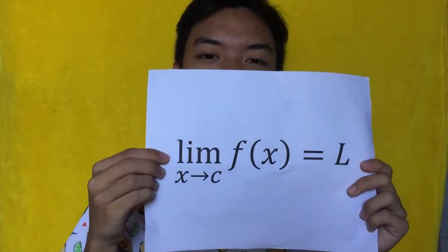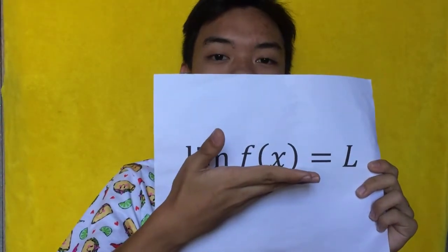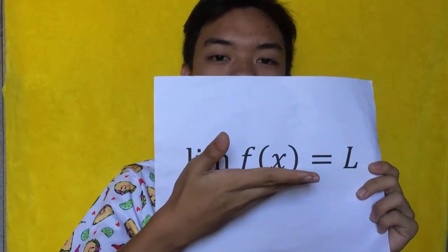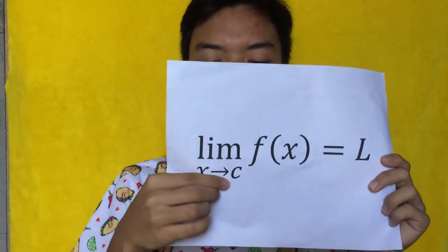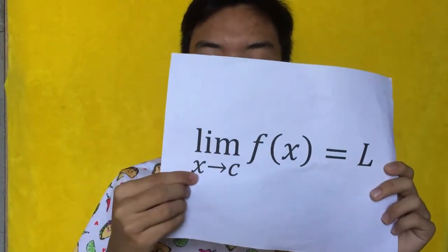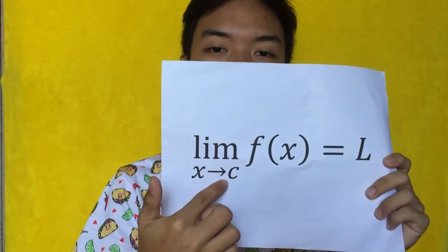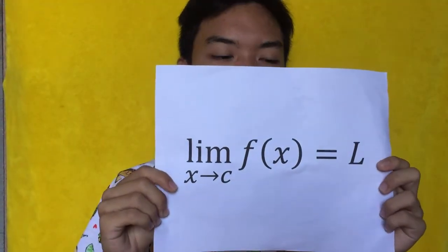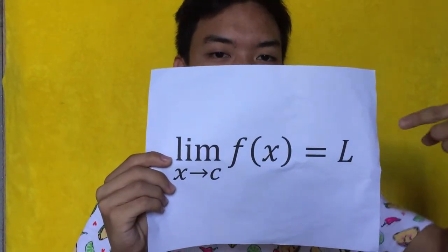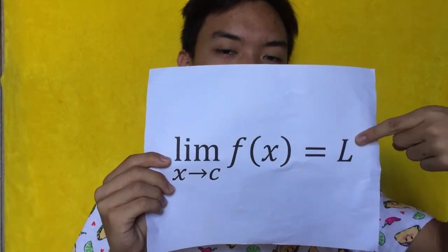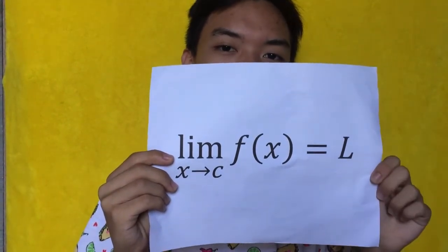The idea with limits is we want to take a look at a function f of x and take a look at its various outputs as it approaches a specific value along the x-axis, which is c. As we get closer and closer to this specific c value, we'll notice that the output of our function will get closer and closer to a number L, which would also be our limit.